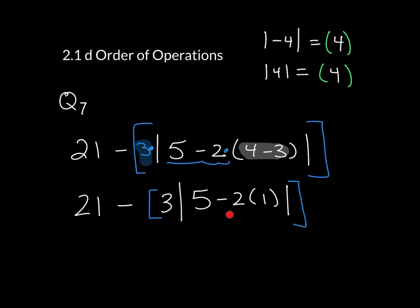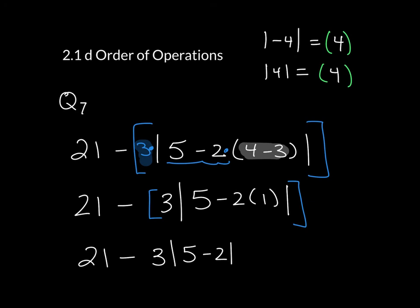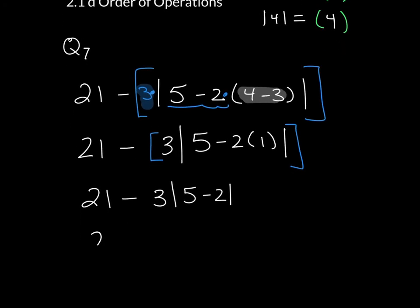All right, next thing we're going to do is simplify the inside of this absolute value. That becomes 5 minus 2 times 1, which is just 2. I'm just going to copy everything else down. So that is 21 minus 3 times the absolute value of 5 minus 2, which is 21 minus 3 times the absolute value of 3.